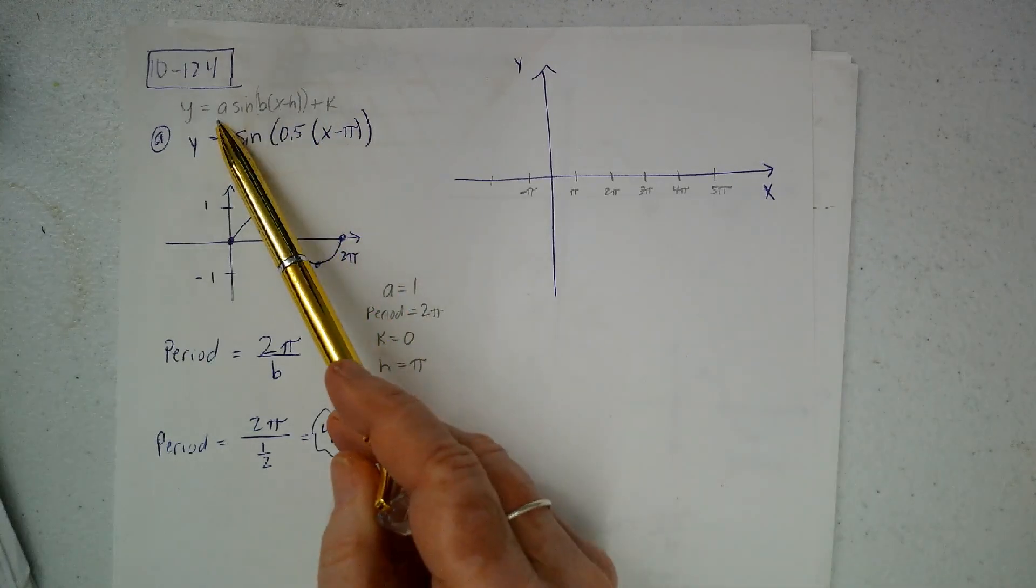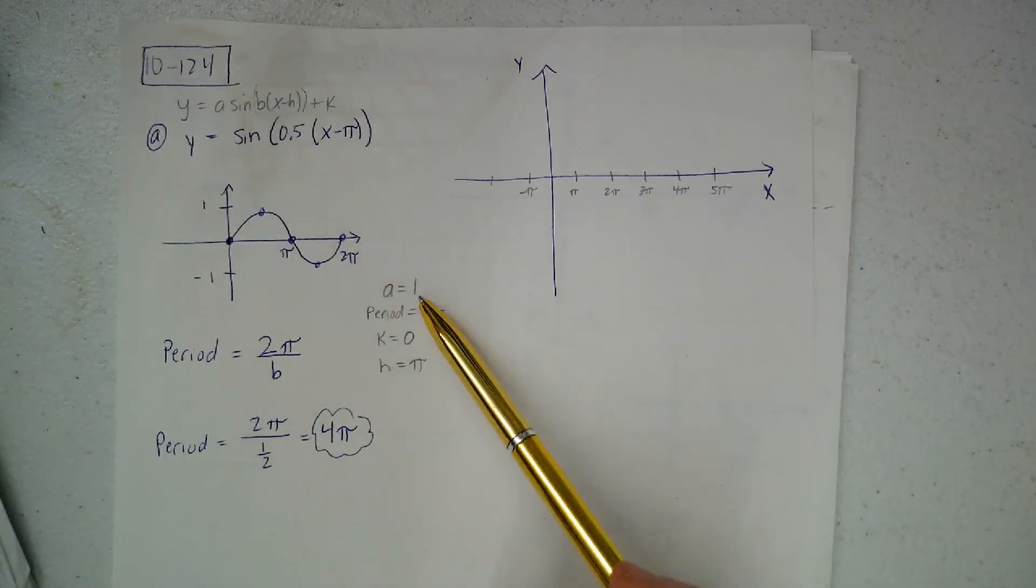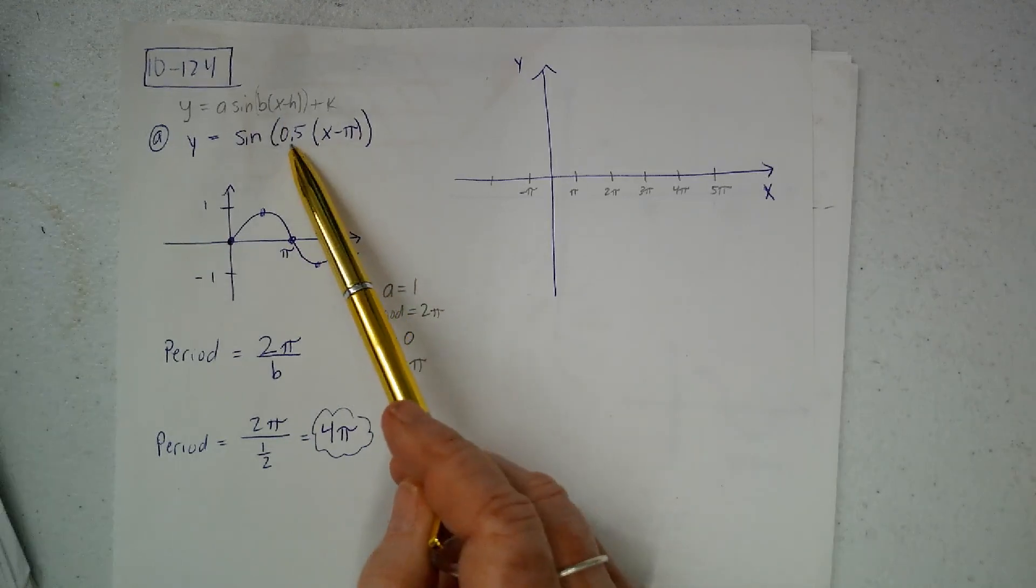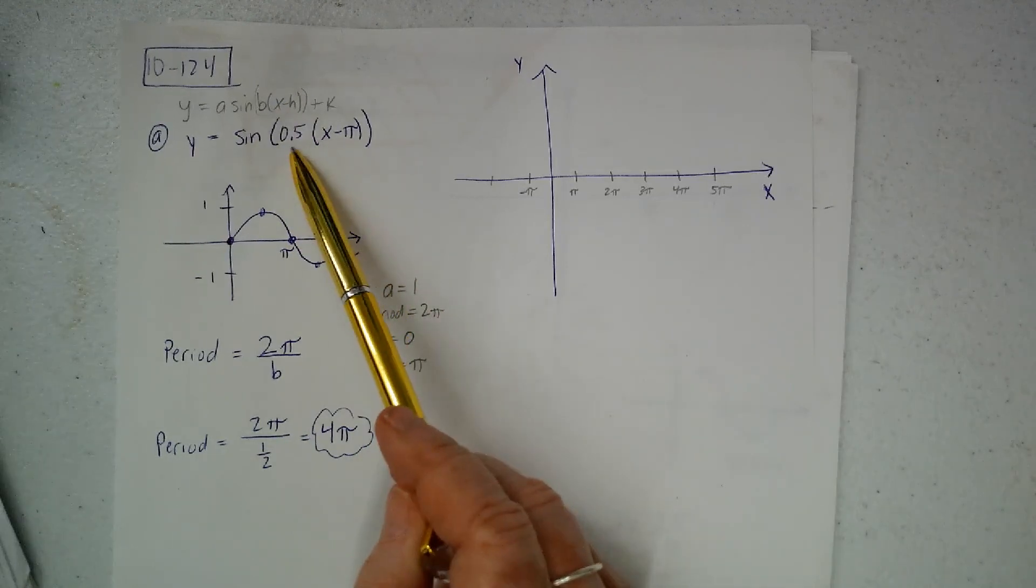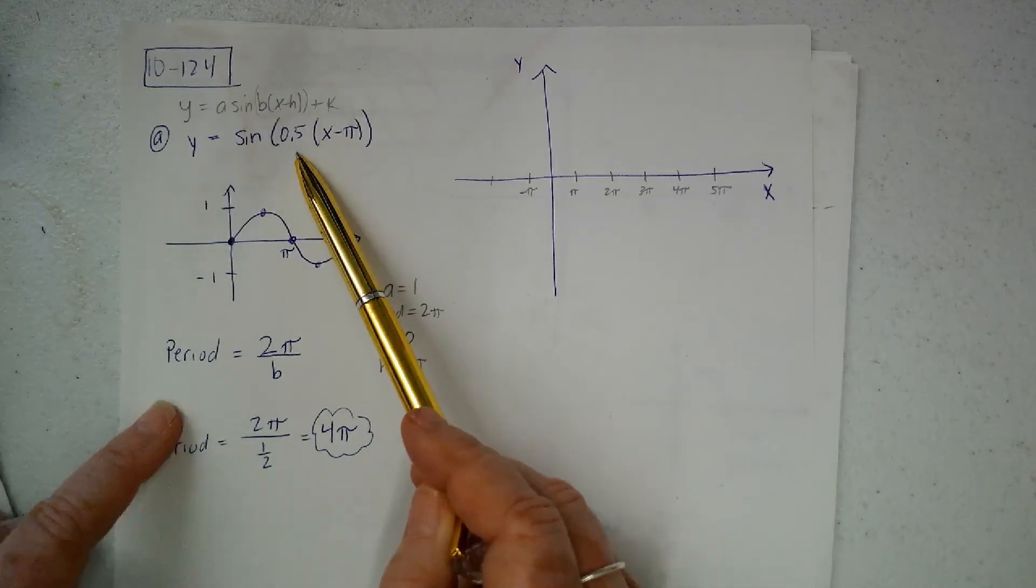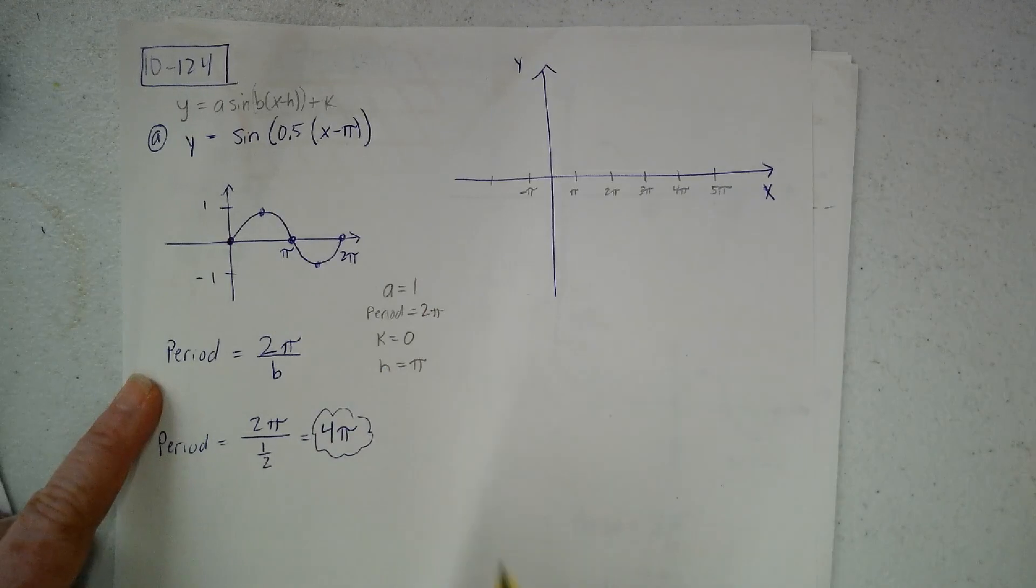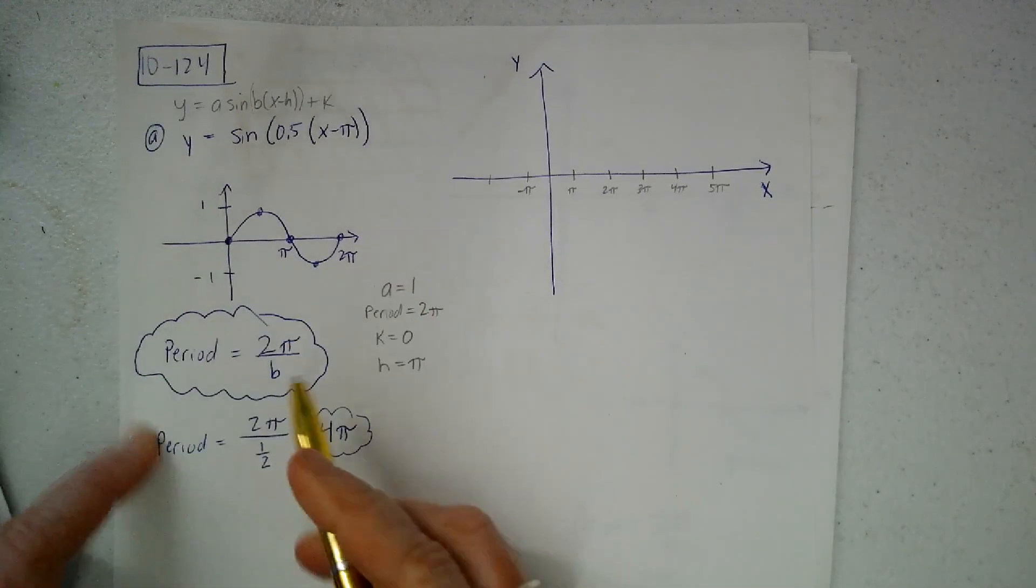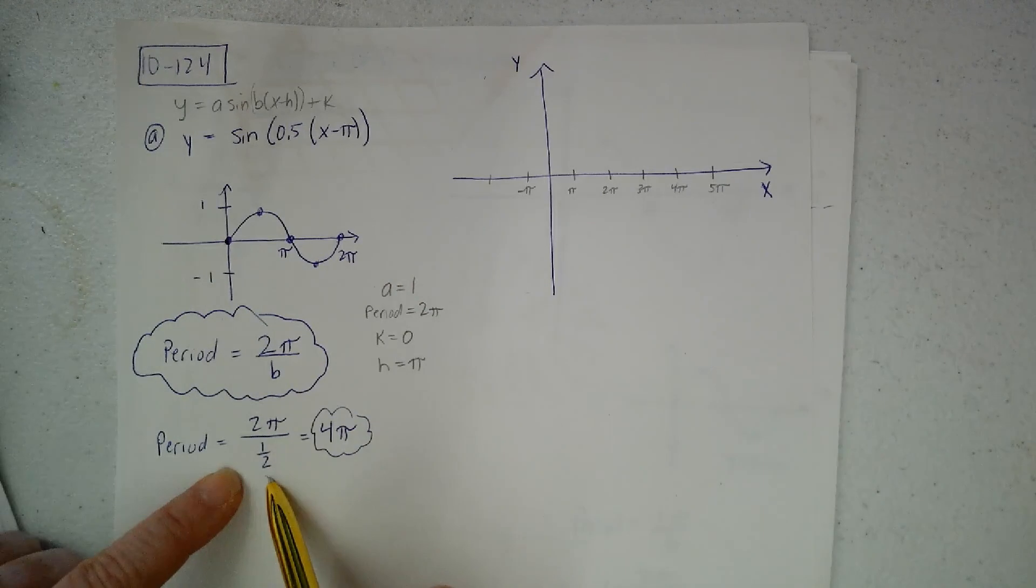So I look here and I know that A is in front of sine, so A is 1. This is actually in the B position, so 0.5 is B. And then I plug that into my formula.